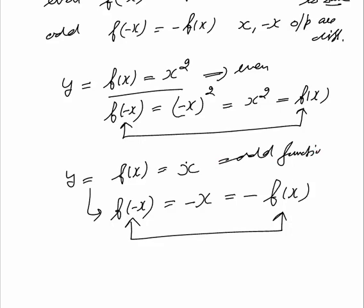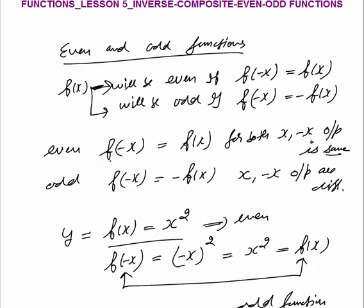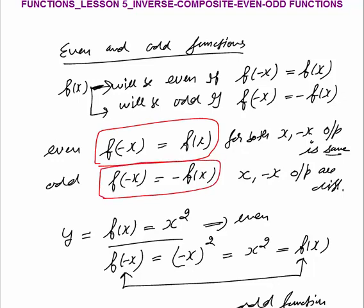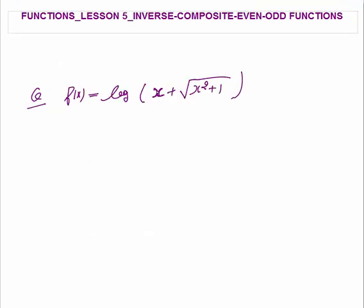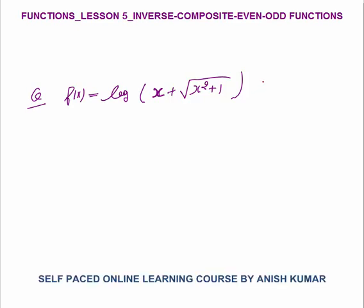So in this way: if f(minus x) equals f(x), the function is even; if f(minus x) equals minus f(x), the function is odd. That makes the concept of even and odd functions clear. Now the next question: f(x) = log(x + √(x² + 1)). We need to tell whether this function is even or odd. Now try to solve it yourself first.